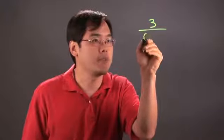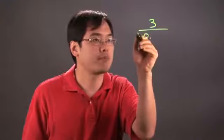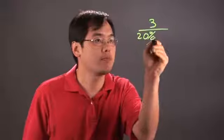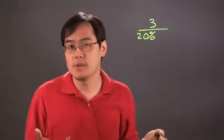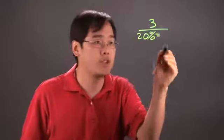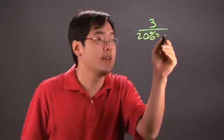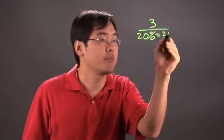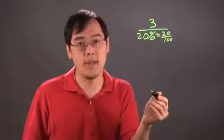Suppose you're dividing 3 by, let's just say, 20%. Now, seems a little bit imposing, but what you want to think about is take the 20% and convert it to a fraction. There's a couple of ways you can do that. You can think of 20% as 20 over 100 and then go from there.